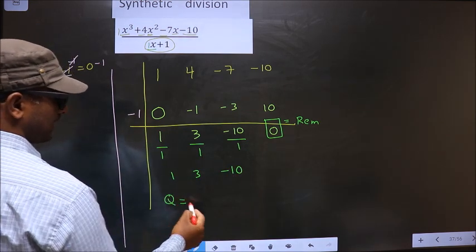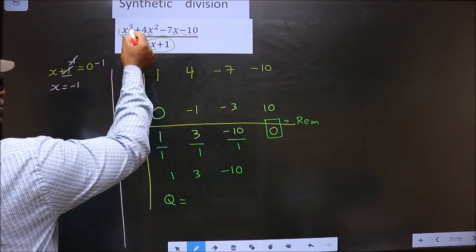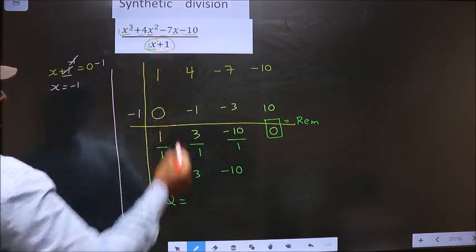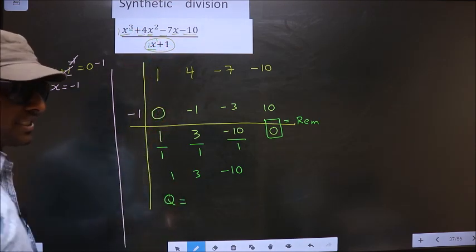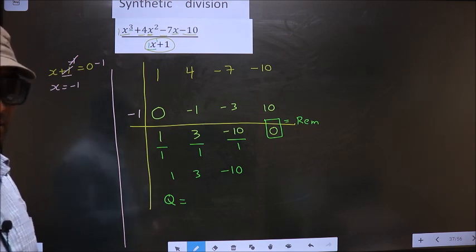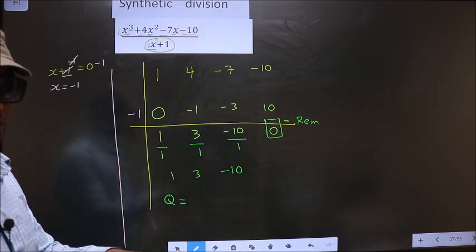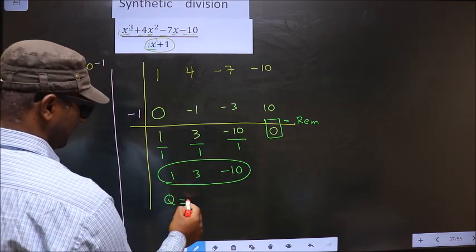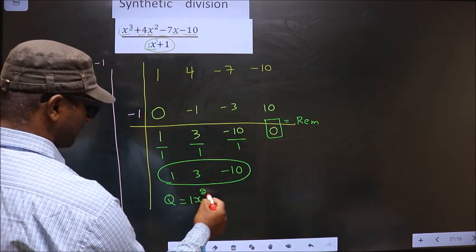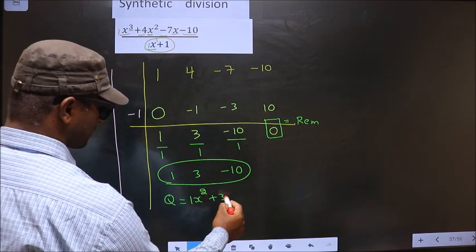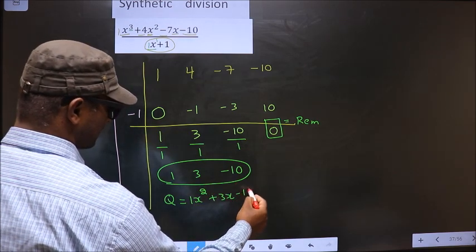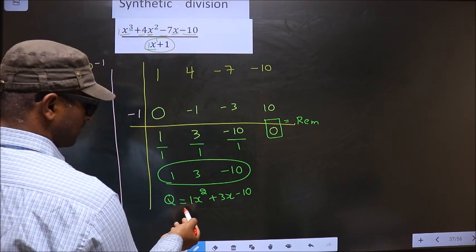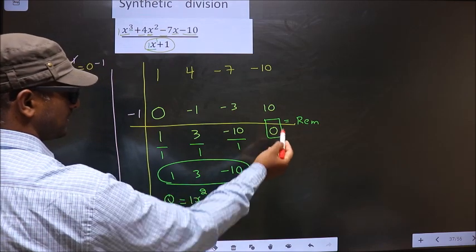So now our quotient is... Numerator is cubic, denominator is linear, so quotient will be quadratic. Coefficients of that quadratic are these numbers. That is 1x square plus 3x minus 10. So this is our quotient. And this is our remainder.